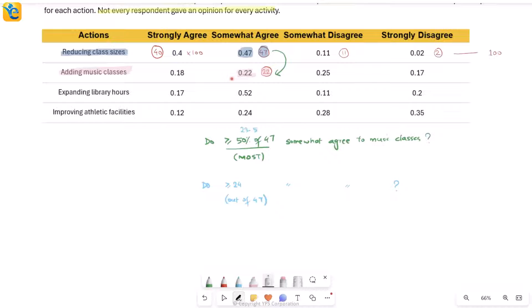At least I have simplified my question. Observe very carefully. It seems as if it's asking something difficult, but it's actually really straightforward. The total number of people who somewhat agree to music classes is 22 only. Then how can at least 24 people out of these 47 somewhat agree? Even if this 22 is completely a part of this 47, even then the maximum I can go is 22 out of 47 people. I will never be able to reach 24 people.